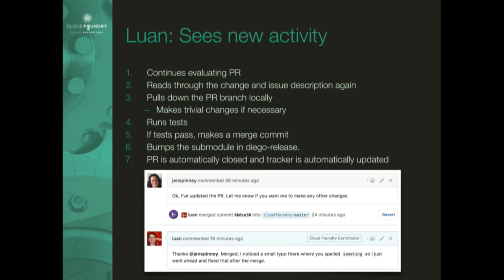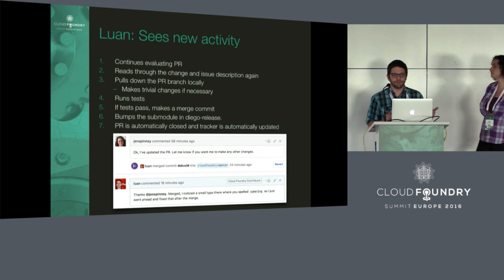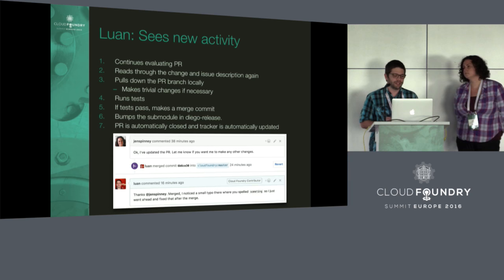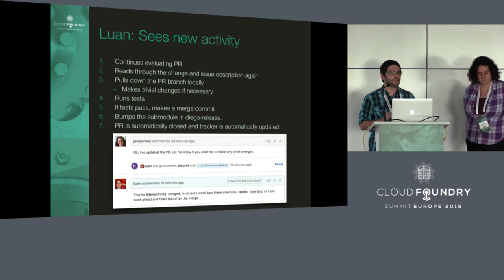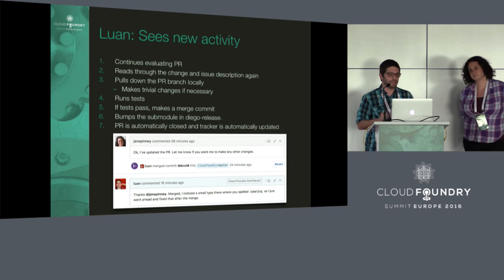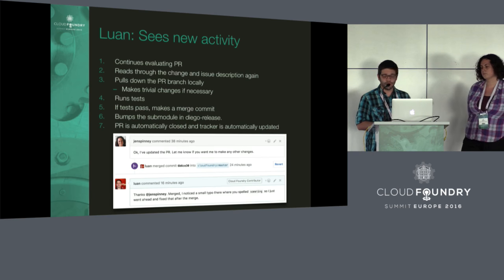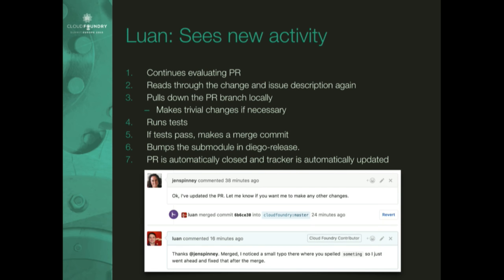When I get the updated pull request, I look at it again, make sure the changes make sense, and pull the code down locally to run the tests. If there are minor things like a typo, we'll fix those ourselves. We run the tests, make sure it's all good, and then merge it. When we push the merge, GitHub automatically updates the pull request and sends Jen a notification. It also updates our Tracker story to signal that everything is merged, so the product manager knows to review and accept the story. And at that point, the contribution is merged and done.